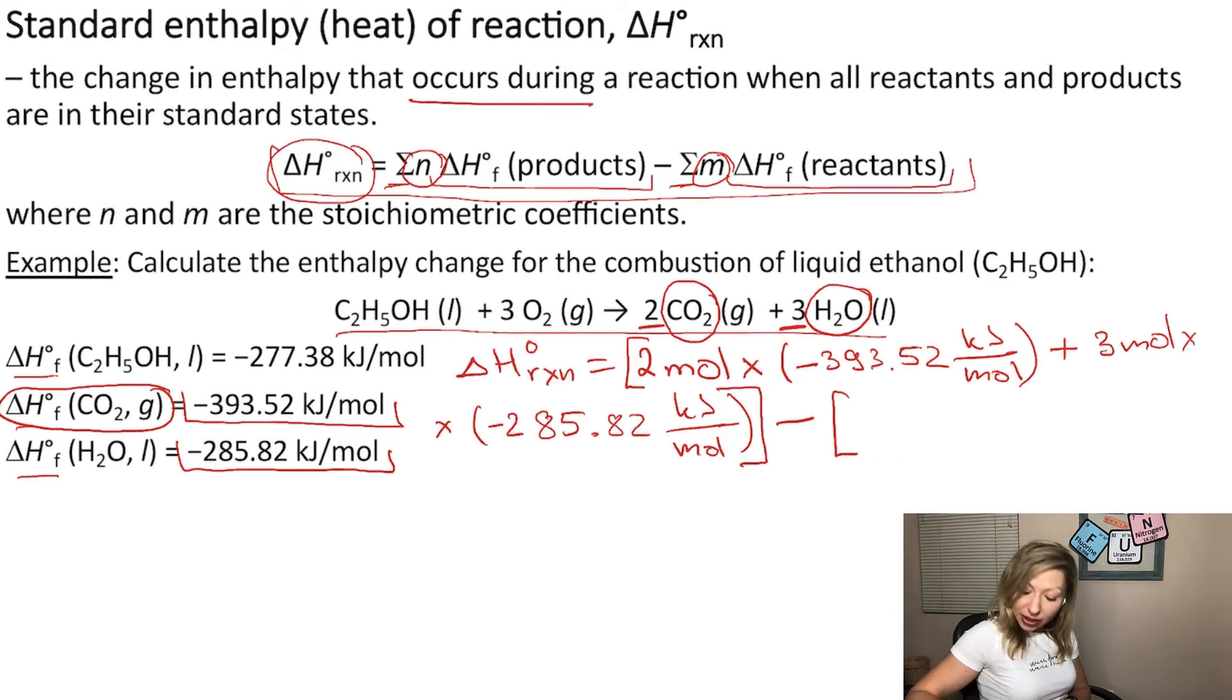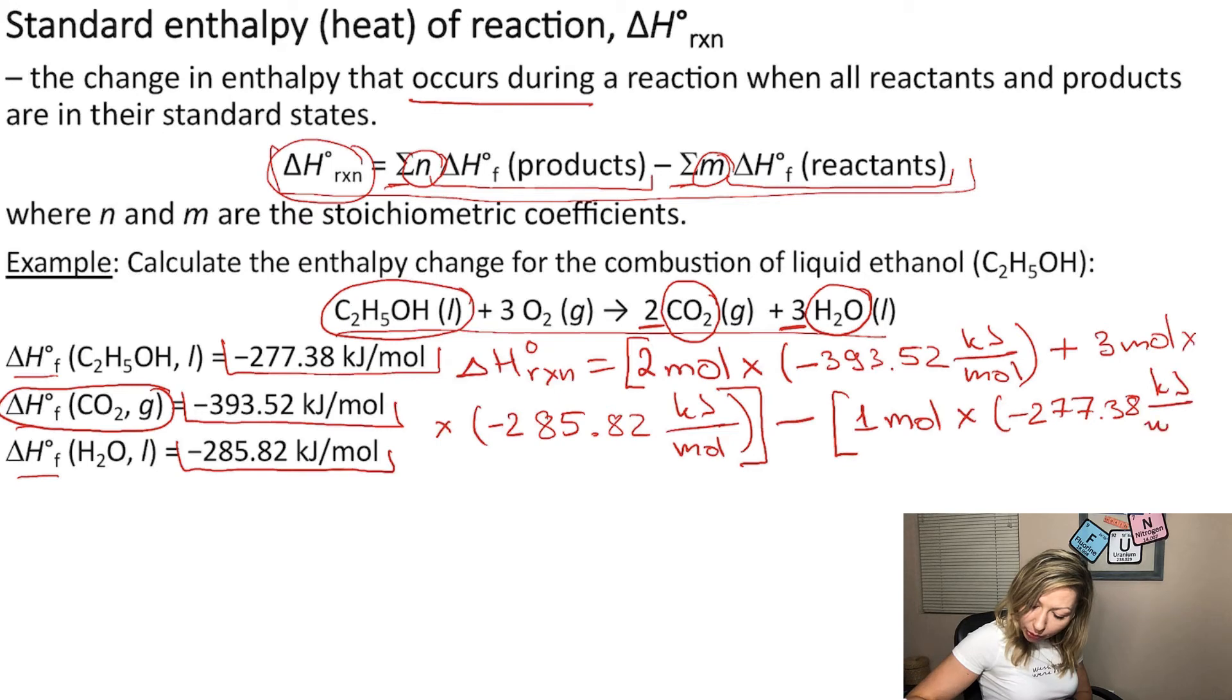It's ethanol. It's right here, C2H5OH. How many moles do I have? One. So I need to take one mole multiplied by the heat of formation of ethanol, which is minus 277.38 kilojoules per mole.